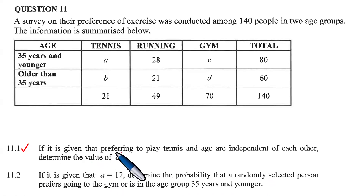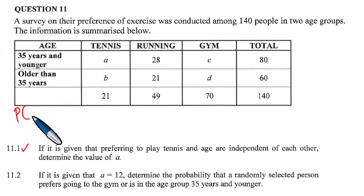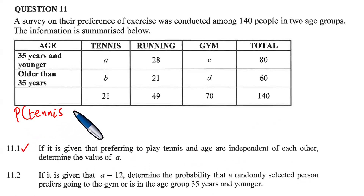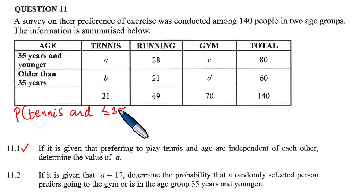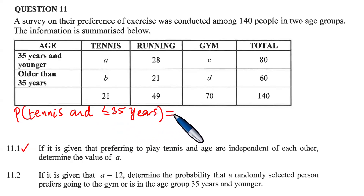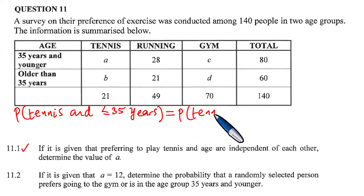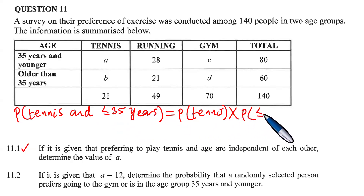We start by solving question 11.1. Since preferring to play tennis and age are independent of each other, we use the independence condition: the probability of tennis AND less than or equal to 35 years equals the probability of tennis multiplied by the probability of less than or equal to 35 years.